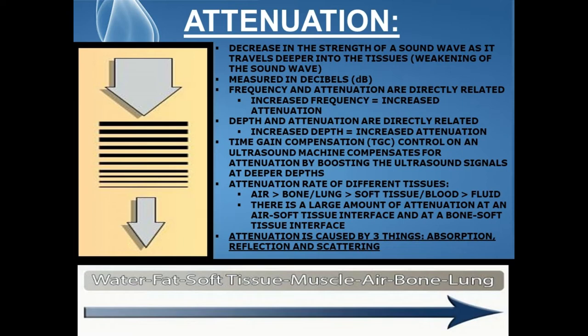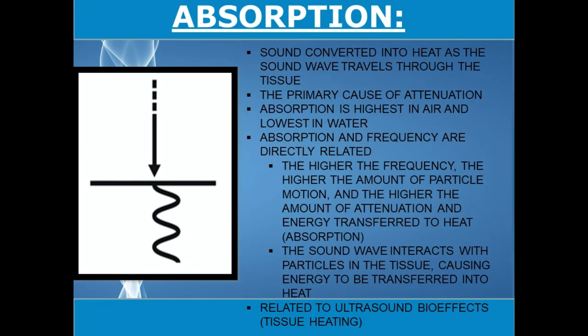Attenuation is caused by three things: absorption, reflection, and scattering. Absorption is the first cause — this is when sound is converted into heat as the sound wave travels through the tissue, and this is the primary cause of attenuation. Absorption is highest in air and lowest in water. Absorption and frequency are directly related: the higher the frequency, the higher the amount of particle motion, and the higher the amount of attenuation and energy transferred to heat. The sound wave interacts with particles in the tissue, causing energy to be transferred into heat, and this is also related to ultrasound bio effects and tissue heating.